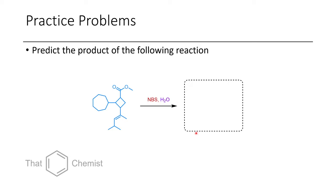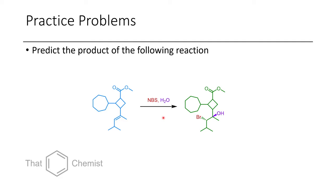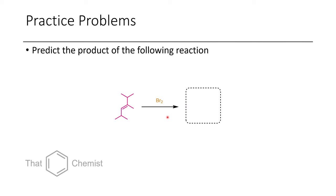The next problem is the bromination of this alkene in the presence of water, which is known as the halohydrin reaction. The water will add at the more substituted position in an anti-orientation relative to the bromine. In the final reaction, we have an alkene reacting with bromine, and the important thing to remember is that we get a 1,2-anti product. Both bromines are added because there's no other competing nucleophile.